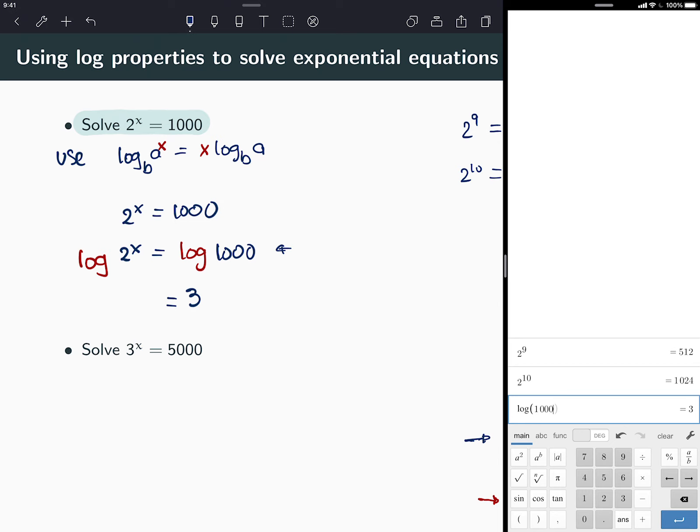Now on the left side, going back to my equation, I'm going to use the property that I said, so that x comes in front. I have x log of 2. So on the right side I evaluate log of 1000 and I got 3. On the left side I'm using the property that allows me to bring this number x outside of the log and bring it in front.